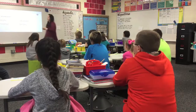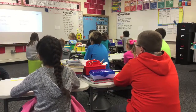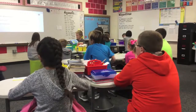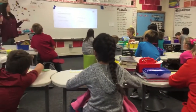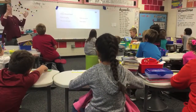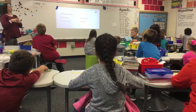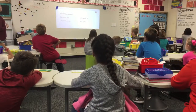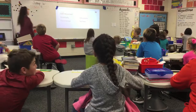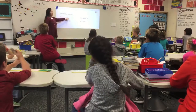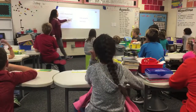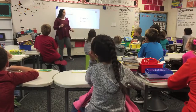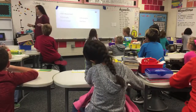Here is your bell ringer. You are going to talk with your partner and figure out which word does not match and why. Three of them will be a group; one of them does not match. Let's read the words together, make sure we know what they are: multiply, perimeter, measure, inches. Talk to your partner and decide which one does not fit.